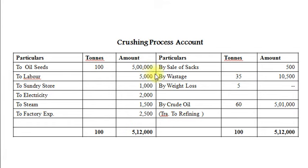Other cost elements: labor cost Rs. 5000, sundry stores Rs. 1000, electricity Rs. 2000, steam Rs. 1500, factory expenses Rs. 2500.